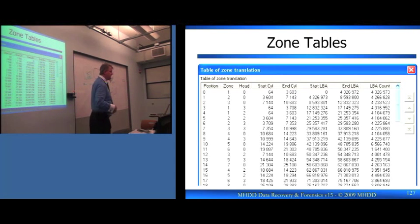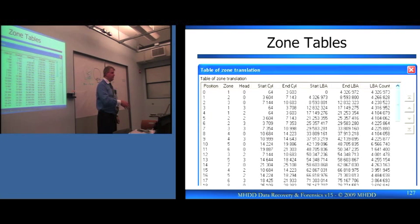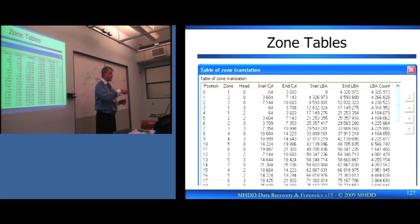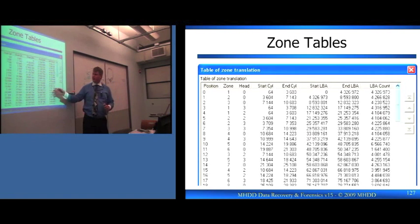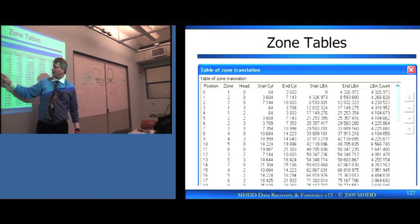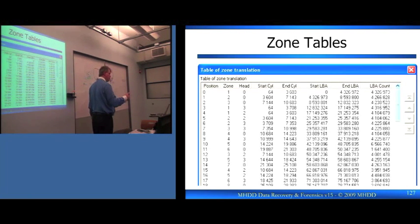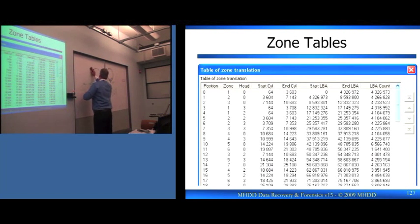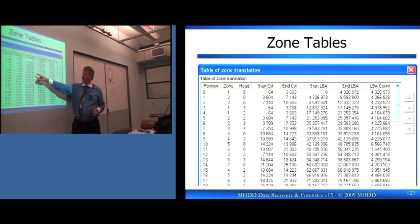If your job is database optimization, your job might be to figure out where the fastest content is on the platter and write to that location or make a partition there. For us in data recovery, it matters for turning off heads and dealing with their locations on the platters. If you have a bad head, that zone will be associated with one side of a platter. These are located based upon where their head locations are and then their zones are.